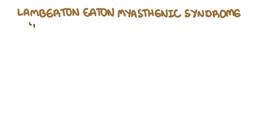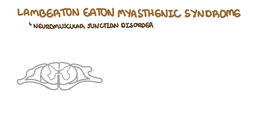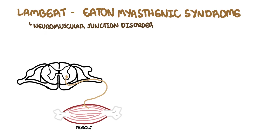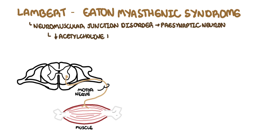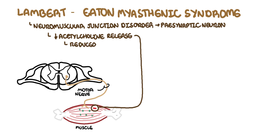Lambert-Eaton Myasthenic Syndrome is a neuromuscular junction disorder that was first described by Lambert, Eaton, and Rook in the 1950s. It is a disorder of voltage-gated calcium channels in the presynaptic motor neurons — the neurons that supply the skeletal muscles. The voltage-gated calcium channels do not allow calcium influx, causing reduced acetylcholine release into the synaptic cleft and thus reduced muscle contraction and weakness.